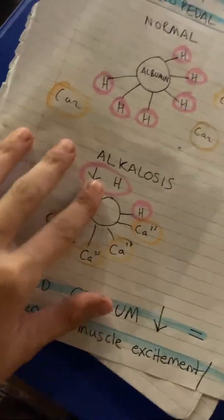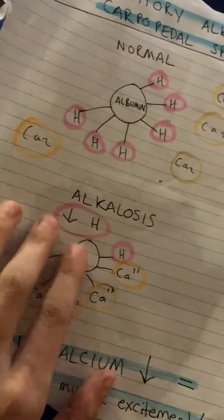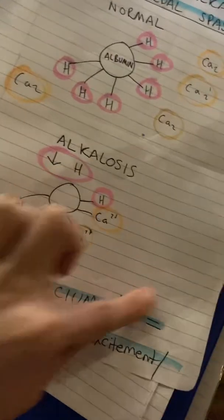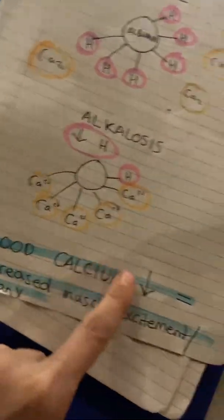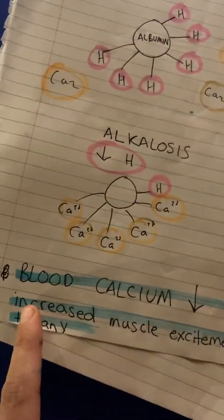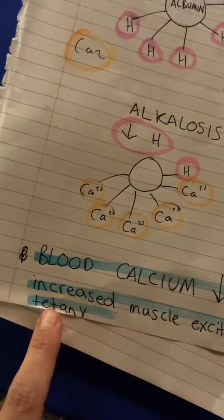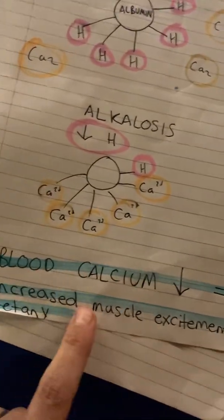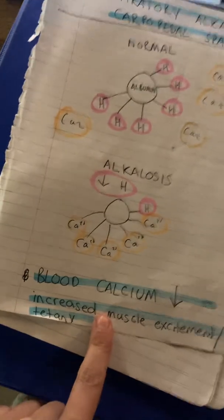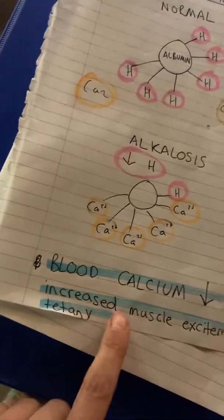Now the calcium is binding to albumin instead of floating free, so there's not enough free calcium in the blood — that's hypocalcemia. Hypocalcemia causes increased muscle excitability and tetany. That's how you get the carpopedal spasms associated with respiratory alkalosis.